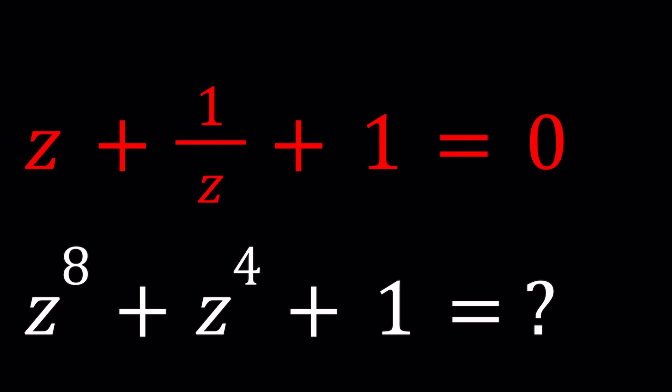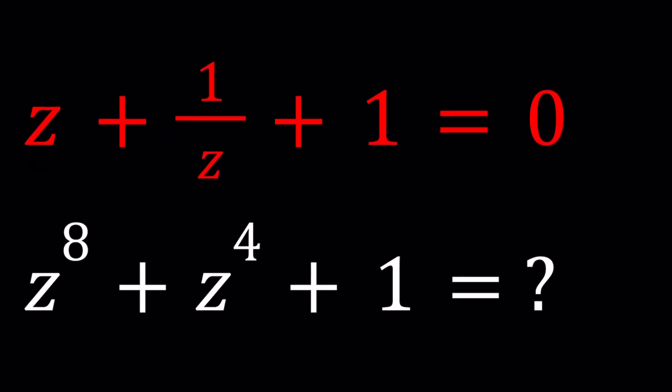So we're given that z plus 1 over z plus 1 equals 0, and we're supposed to evaluate z to the 8th power plus z to the 4th power plus 1. We're going to find a numerical answer for this.